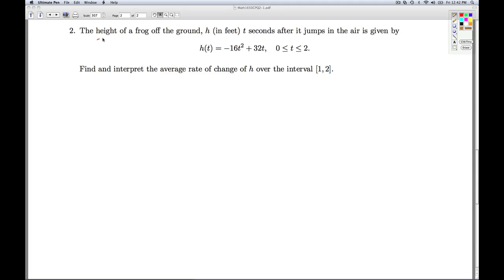Okay, in number two, we're told that the height of a frog off the ground, h, measured in feet, t seconds after it jumps in the air, is given by this formula, and we have our applied domain, t between 0 and 2. We're asked to find and interpret the average rate of change of the function h over this interval.